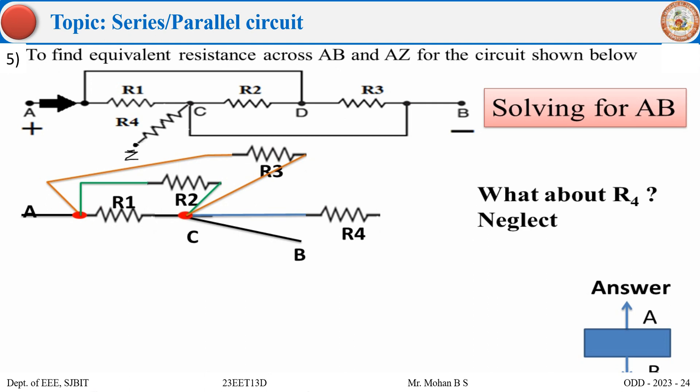Then what about R4? We have to neglect R4. Why? Because we are connecting only across A and B. If I connect a supply across A and B, the current would flow depending upon the value of R1, R2, R3 and then it will come back through point B. If my terminal A is positive, the current would go to point A and then come back by point B. There is no flow of current in R4, so it is not electrically connected to the circuit.